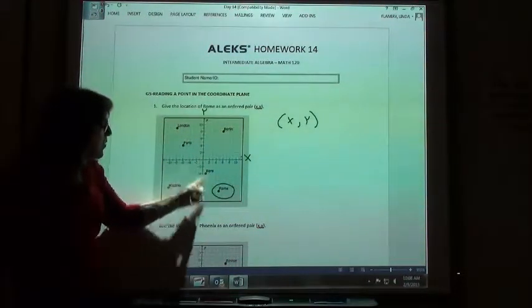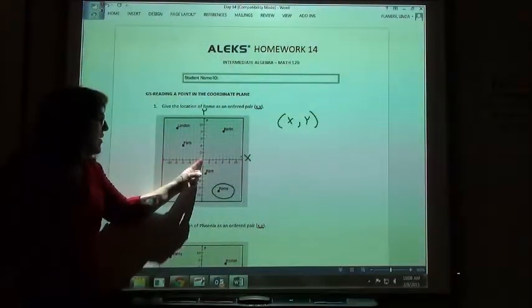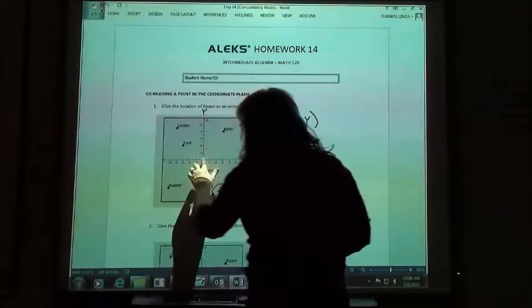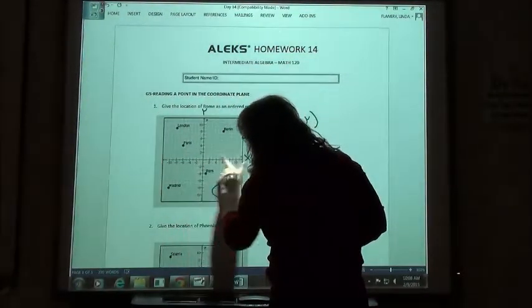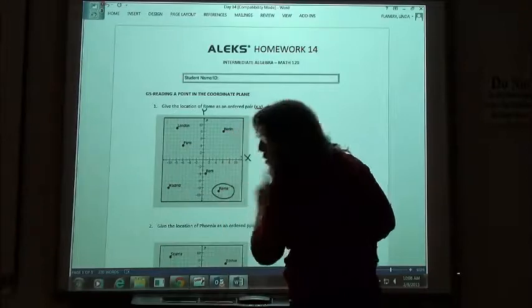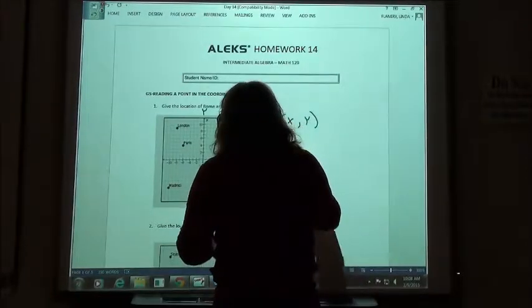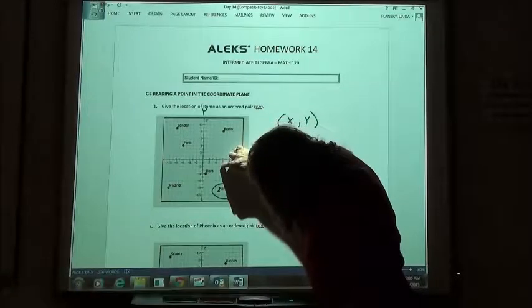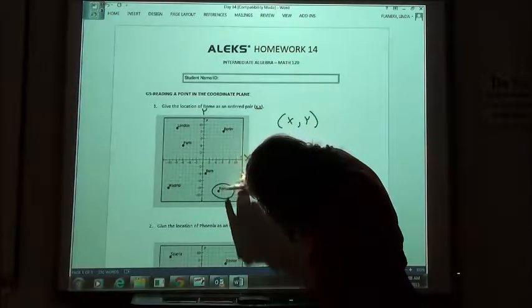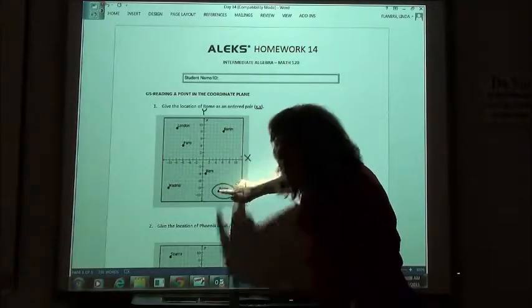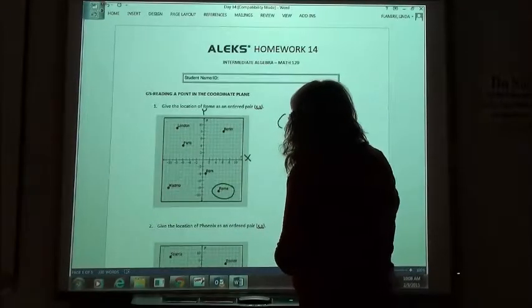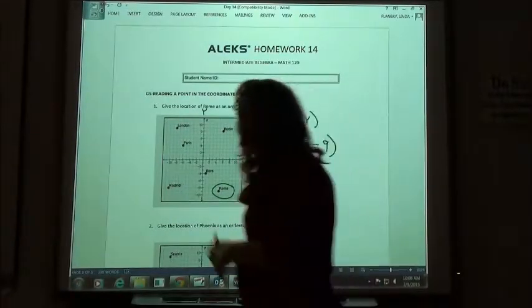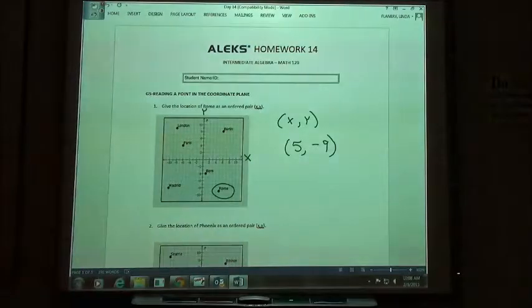Rome, if I start at 0, 0, and I want to get to Rome, I do my x-direction first. So I'm going to count 1, 2, 3, 4, 5 would be right above Rome. My x-direction, I went 5 to the right, positive 5. Then I'm going to go 1, 2, 3, 4, 5, 6, 7, 8, 9 down. So I went negative 9 in the y-direction. My ordered pair is 5, negative 9.